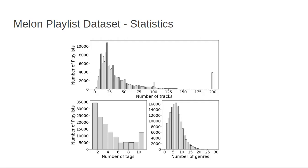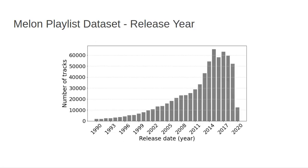Considering the genre annotations, 25% of the tracks in the dataset belong to only Korean music genres, 38% of the tracks to non-Korean music genres, and 27% of the tracks to both Korean and non-Korean genres. In this figure, we see the distribution of tracks concerning their release year. Over 95% of the tracks in the dataset were published after the year 1990.